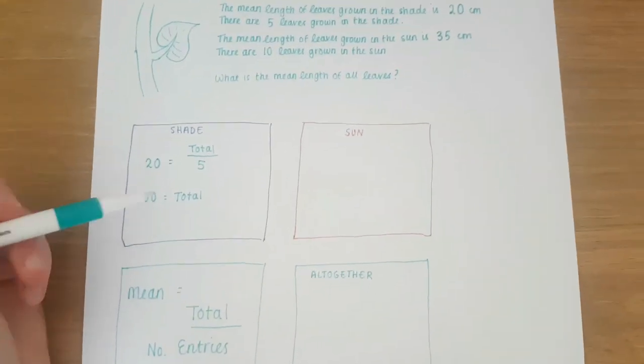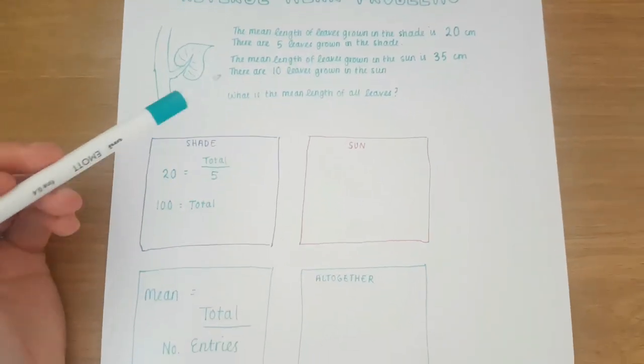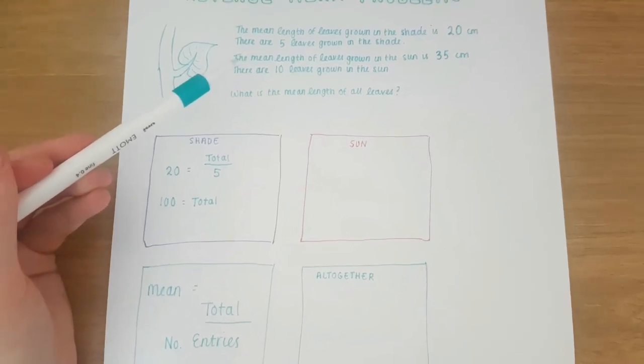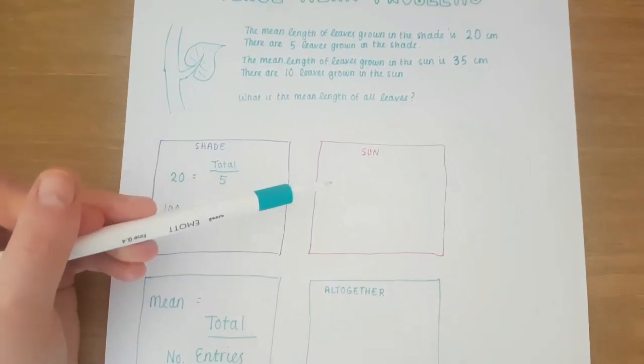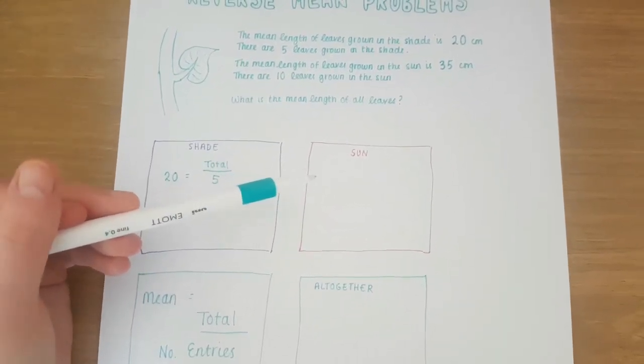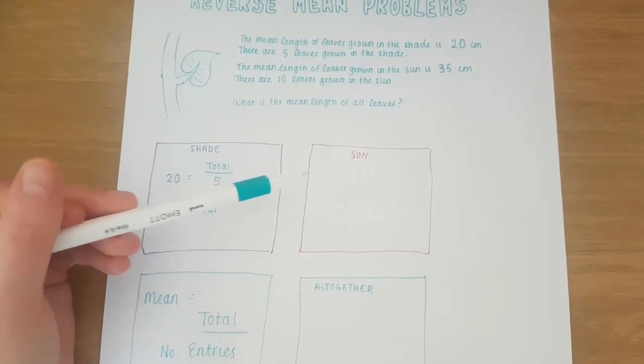We're going to do a similar thing with that in the sun. If you pause the video now and have a go at finding the total in the sun from this information, we'll then go back, find this, and then find the mean all together.